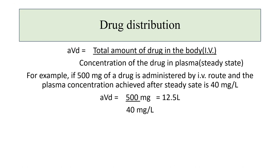The formula for volume of distribution is: apparent volume of distribution equals the total amount of drug injected intravenously divided by the concentration of drug in plasma at steady state. For example, if 500 mg of drug is administered intravenously and the plasma concentration at steady state is 40 mg per liter, then the apparent volume of distribution is 500 mg divided by 40 mg per liter, which equals 12.5 liters. Apparent volume of distribution is always expressed in liters.